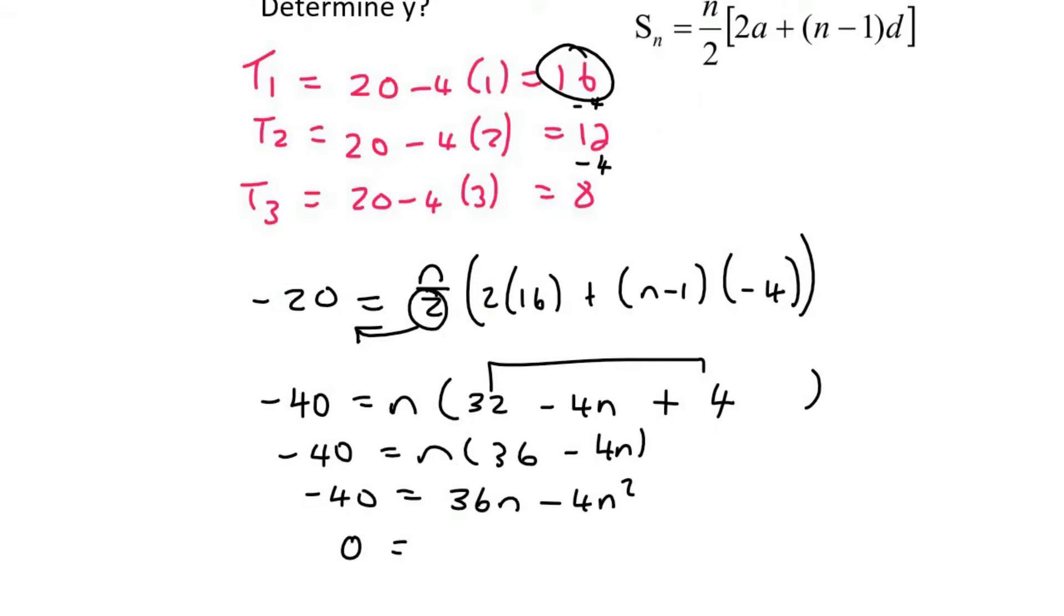A trinomial. I mean, you can do this however you want. I'm actually going to take everything to the left, so that's going to be 4n squared minus 36n minus 40 equals to 0.